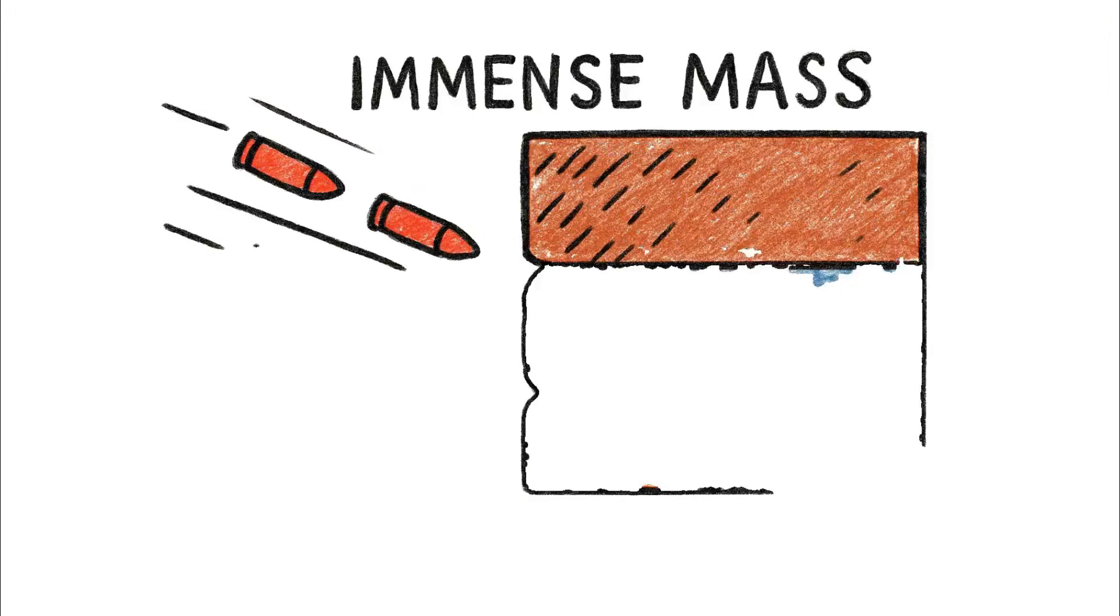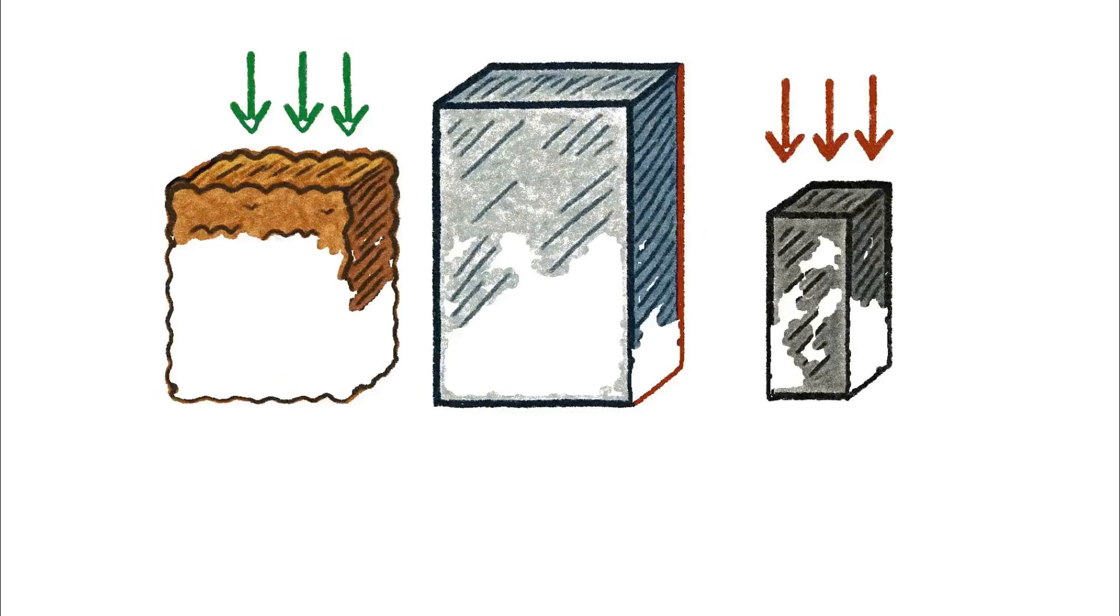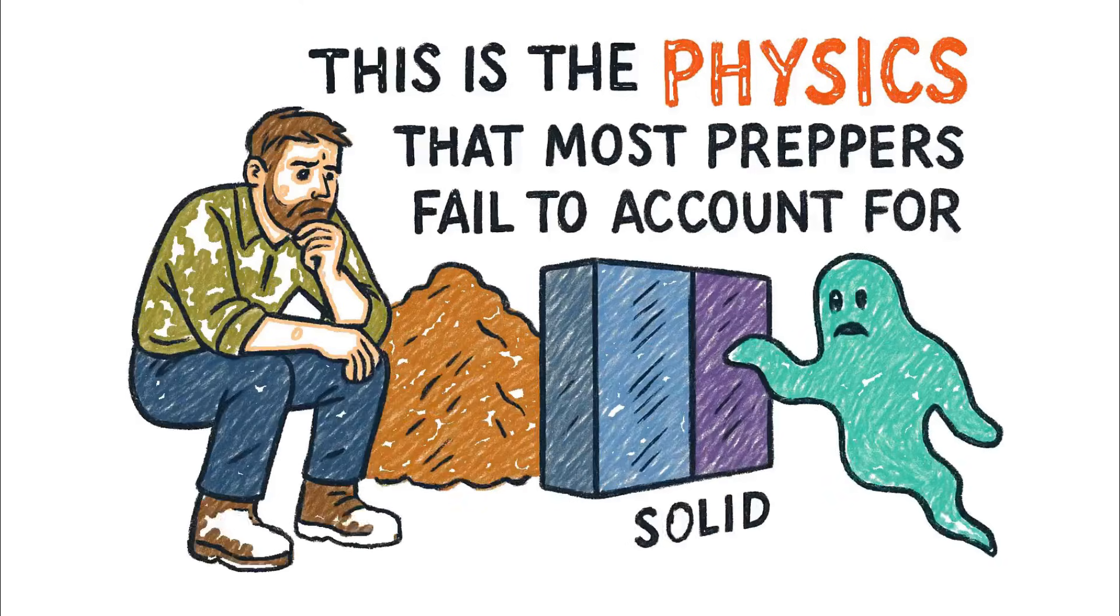To stop these invisible bullets, you need immense mass and density. You need feet of packed earth, thick concrete, or inches of solid lead. This is the physics that most preppers fail to account for.